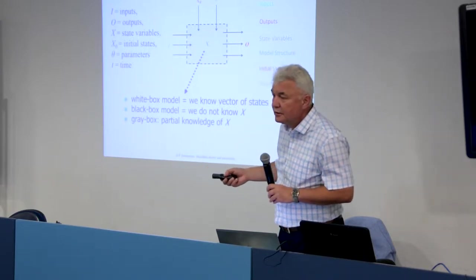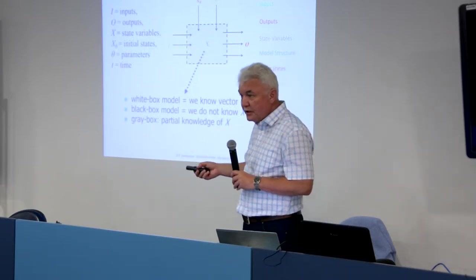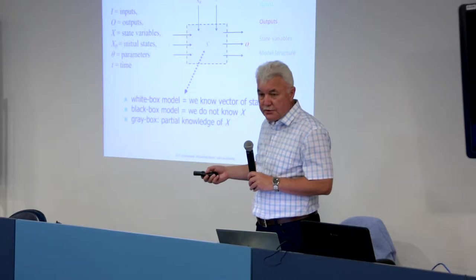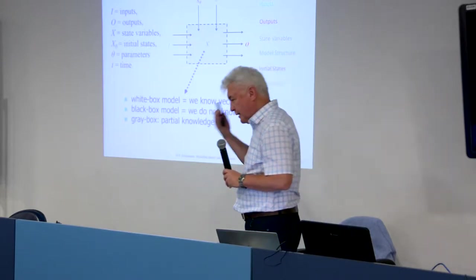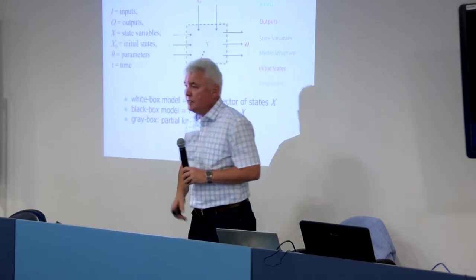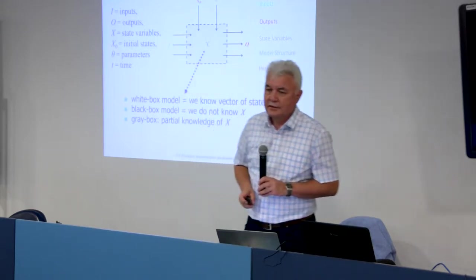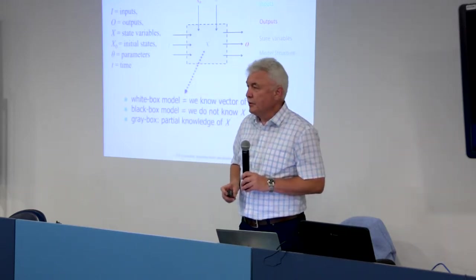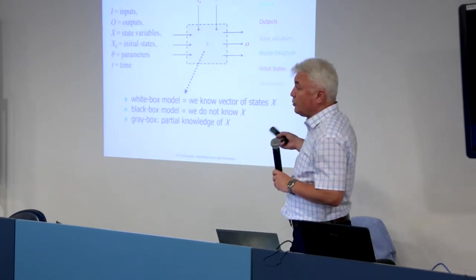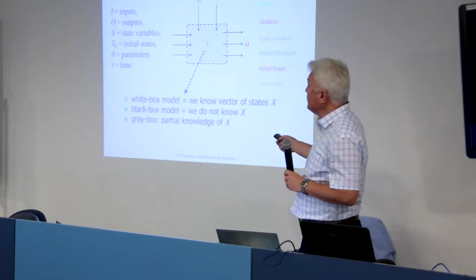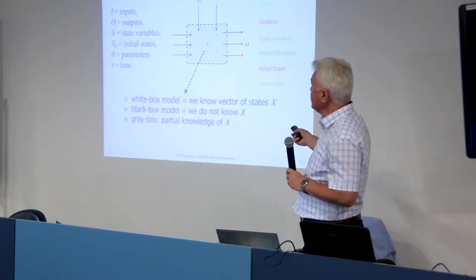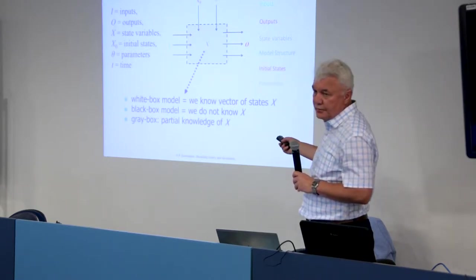Precipitation and perhaps temperature if we think of snow melt. Solar radiation as well, perhaps. But in most rainfall runoff models, precipitation is the input. What are the outputs of this model? Stream flow. Yes, indeed, stream flow or water level sometimes.